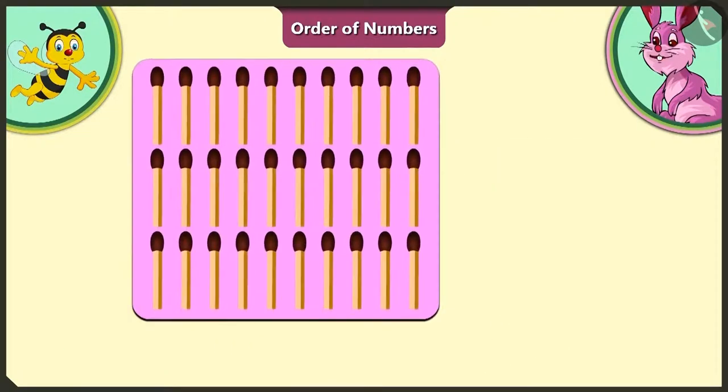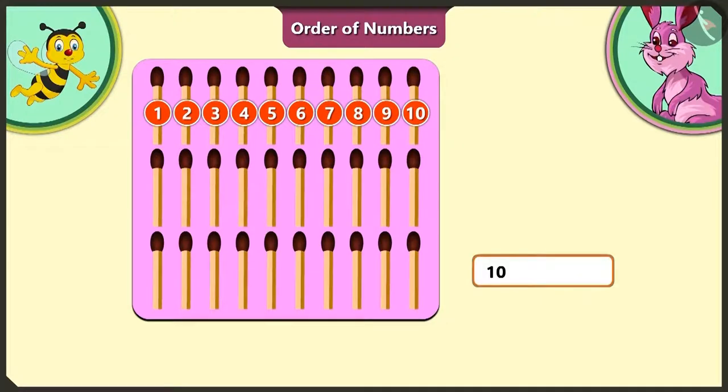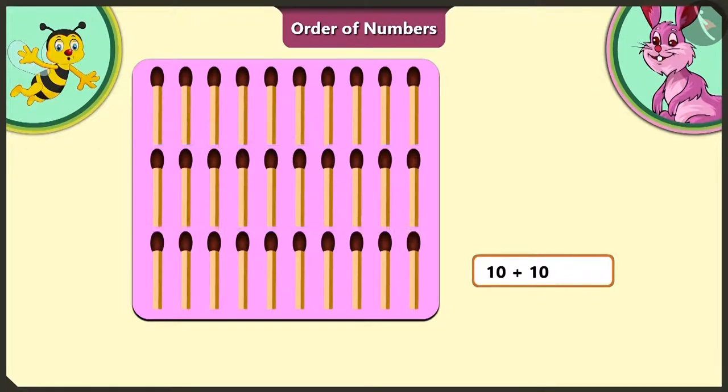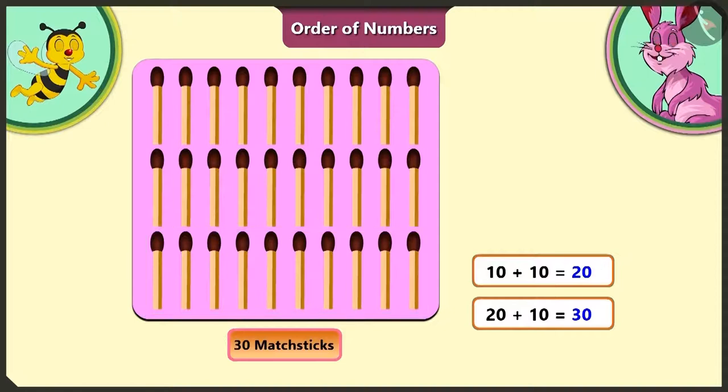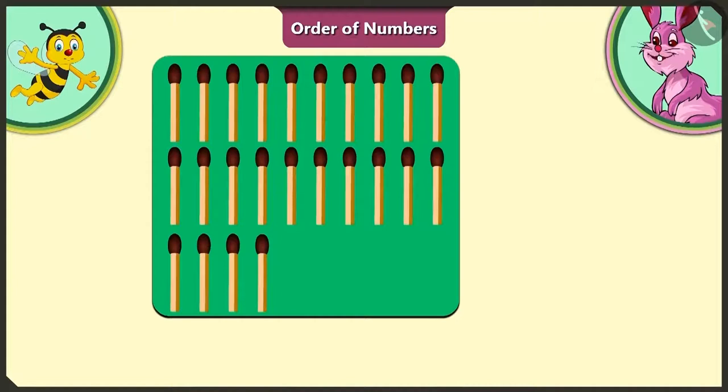And the matchsticks on the pink card? Oh yes, the first group on the pink card has 1, 2, 3, 4, 5, 6, 7, 8, 9, 10 matchsticks. To this first group, if we add the next group, the total number of matchsticks will be 20. To this 20 matchsticks, if we add the next group, we get 30 matchsticks. That means the pink card has 30 matchsticks in all.